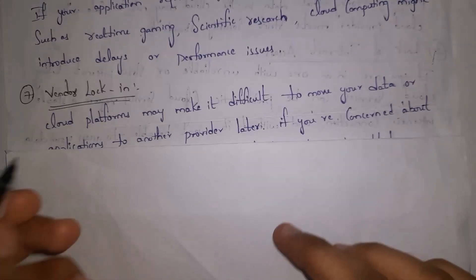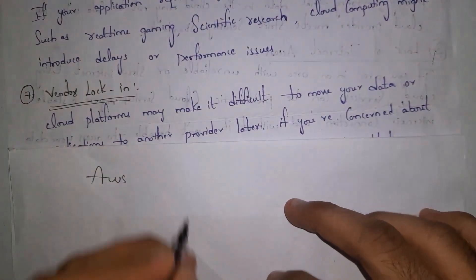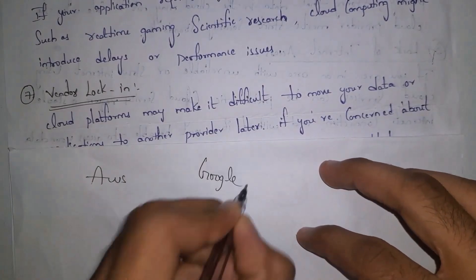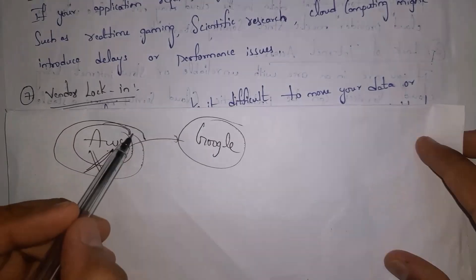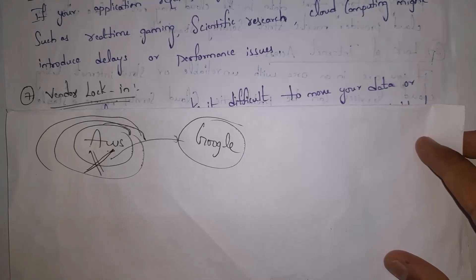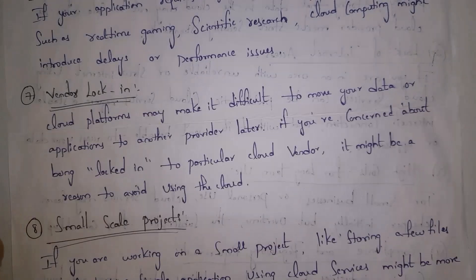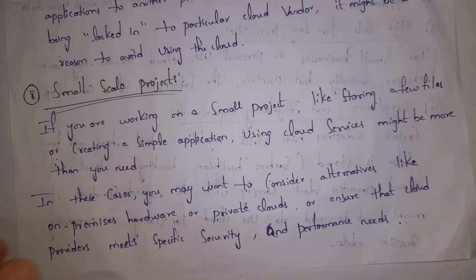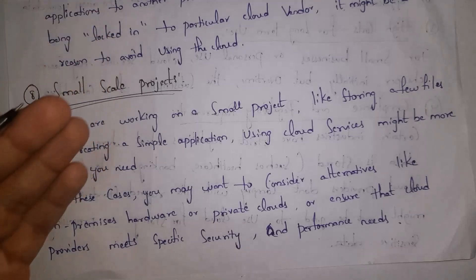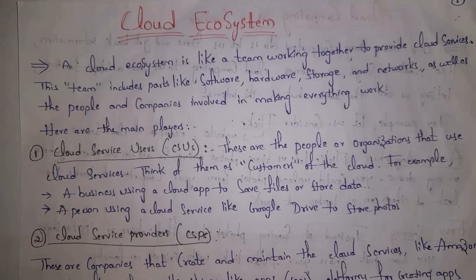The seventh one is vendor lock-in. For example, AWS is one vendor and Google is another. If your complete data is stored in AWS and you want to move it to Google Cloud, AWS may not accept data transfers to other clouds, making migration difficult. The eighth one is small-scale projects. If you are working on very small projects like storing a few files or creating a small application, there is no need for cloud services — you can just use your personal computer.